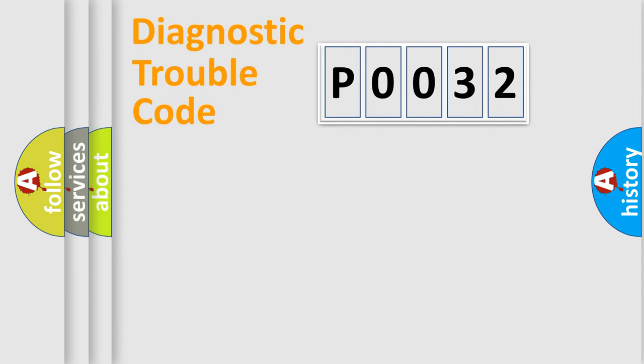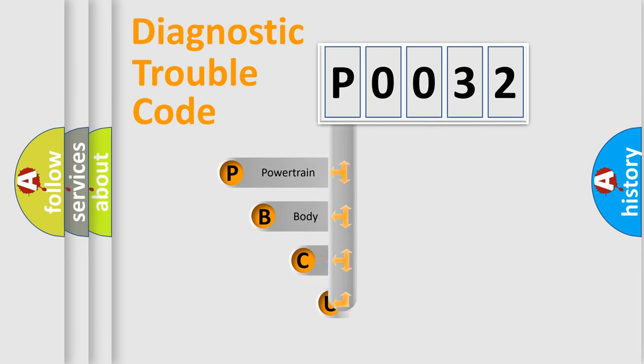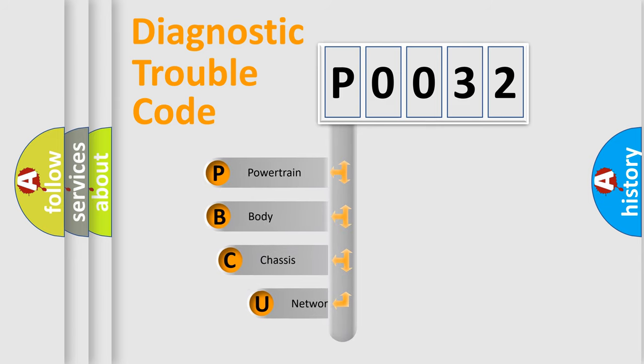Let's do this. First, let's look at the history of diagnostic fault code composition according to the OBD-2 protocol, which is unified for all automakers since 2000. We divide the electric system of an automobile into four basic units.